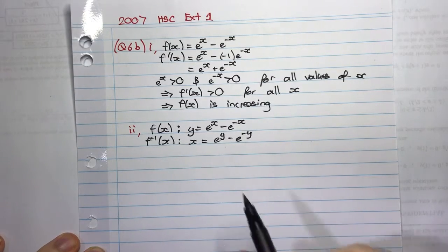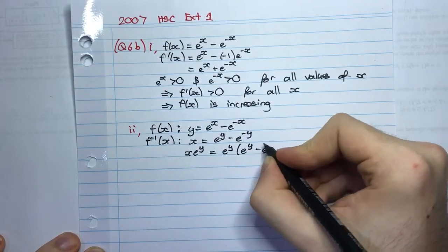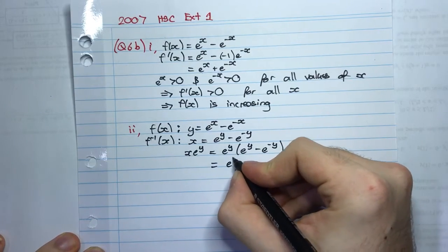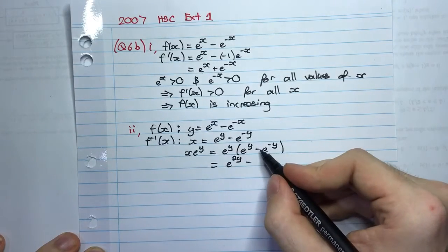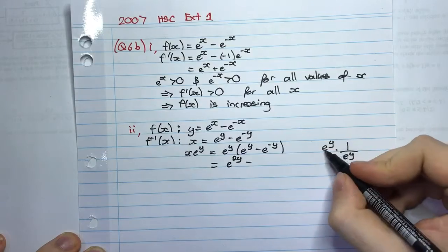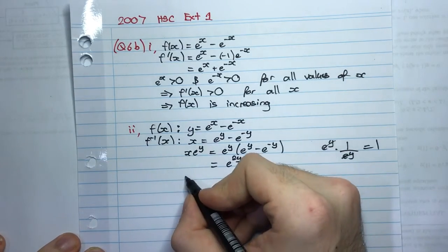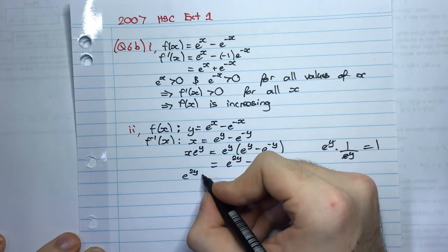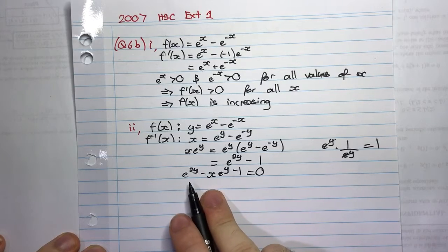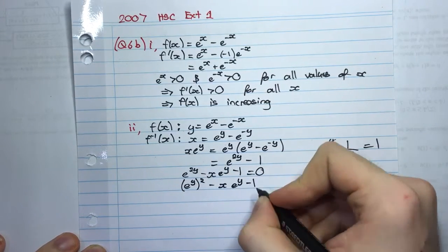If we multiply both sides of the equation by e^y, things become clearer. We get x·e^y = e^y · e^y − e^y · e^(−y). Now e^y · e^y = e^(2y), and e^y · e^(−y) = e^y · (1/e^y) = 1, so that term is just 1. Bringing everything to one side: e^(2y) − x·e^y − 1 = 0. Using exponent laws, this becomes (e^y)² − x·e^y − 1 = 0, which is a quadratic in e^y.